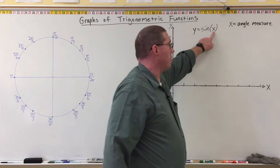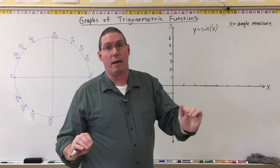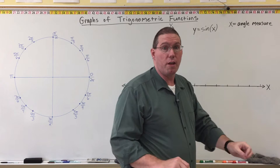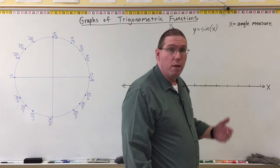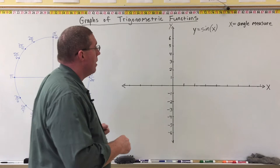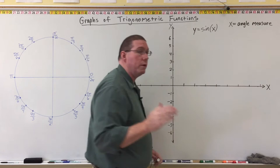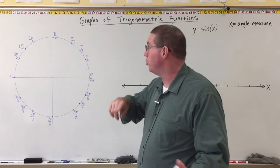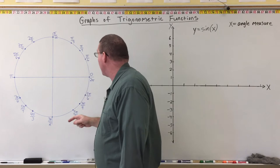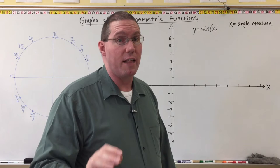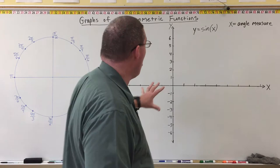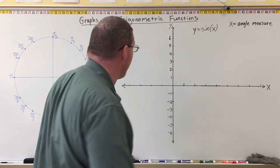Sometimes what we have inside is something like 3x over 4 minus 7, in which case the whole expression is the angle measure. So sometimes x isn't precisely the angle measure, but x is the variable associated with the angle measure. The numbers we put along the x-axis are going to be angle measures. Looking at the unit circle, the angle measures are radians — everything we're going to do here is done in radians, not degrees.